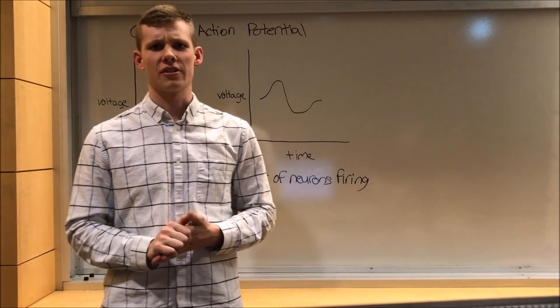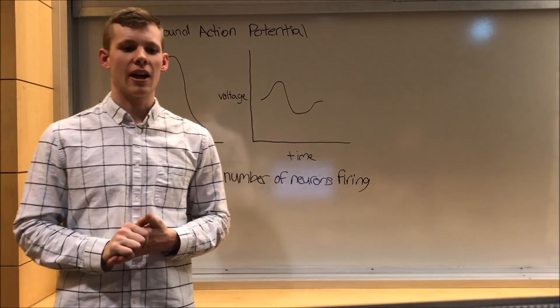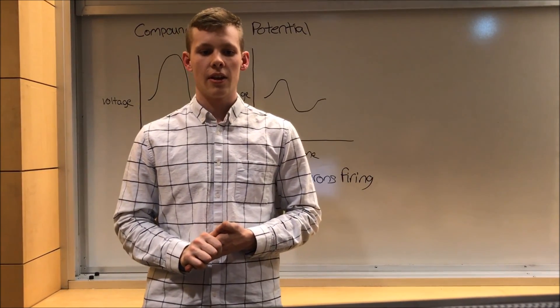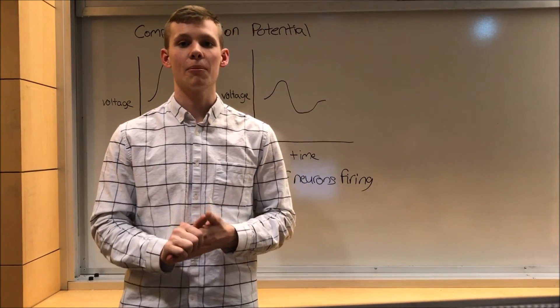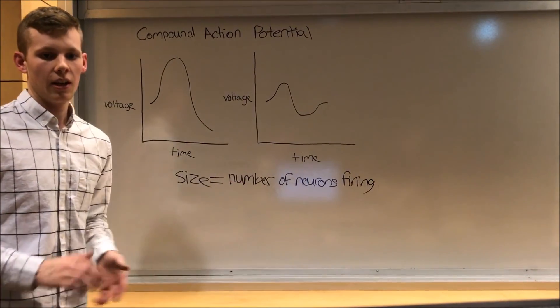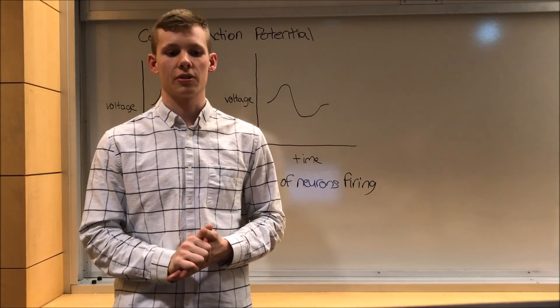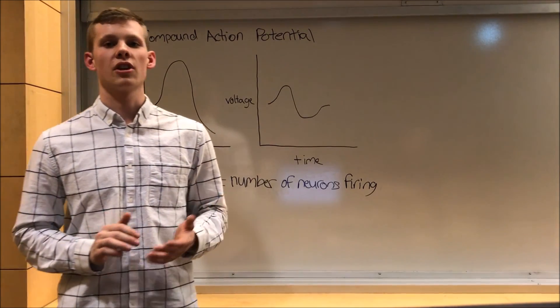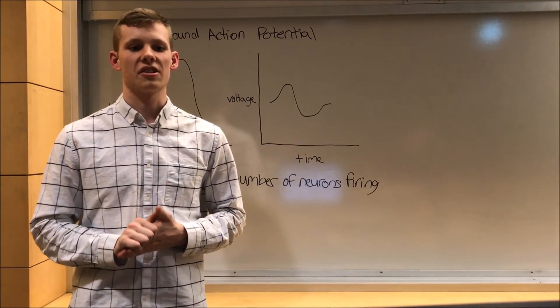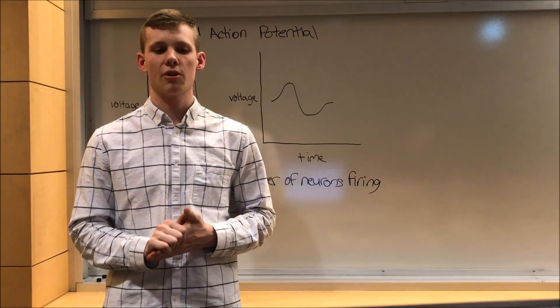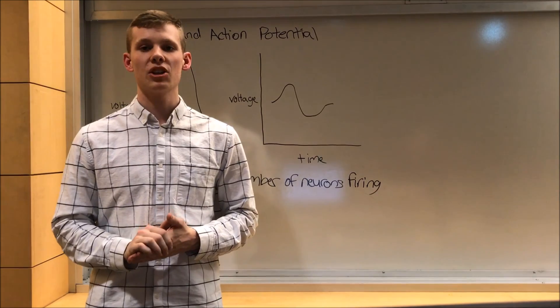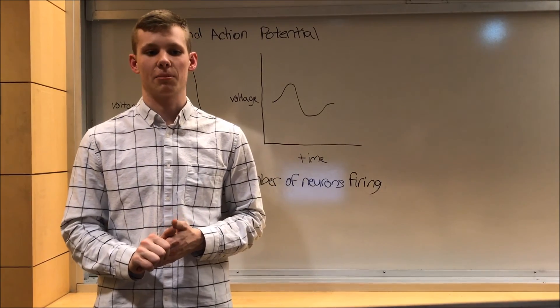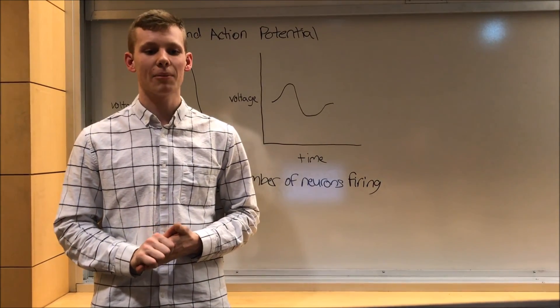However, if an individual neuron still gives an all or nothing response, how do compound action potentials have different levels? Well, not all neurons have the same threshold value. The size of a compound action potential is based on the number of neurons firing. With a stronger sensation, more neurons reach threshold, and the summed compound action potential is bigger. So, overall, we have just discussed how a single action potential fires the same way every time when membrane potential reaches threshold. It is all or nothing. Information about the strength of the sensation is given by the rate of neuron firing for a single action potential, and how many neurons are firing for a compound action potential.